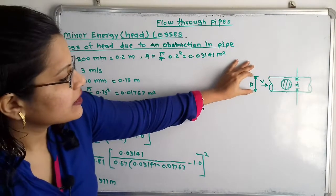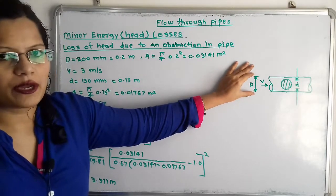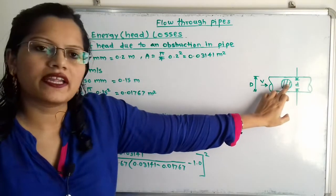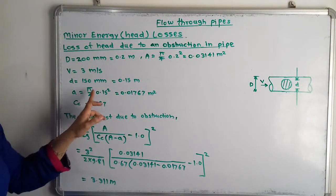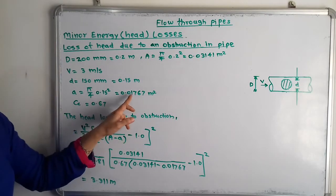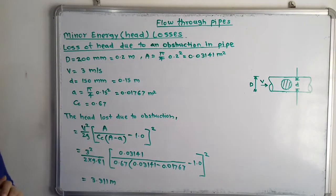We will consider the diameter of pipe as capital D and area as capital A. In the same way, diameter of obstruction is small d and area is small a, that is π/4 d². This equals 0.01767 meter square, and coefficient of contraction is also given as 0.62.